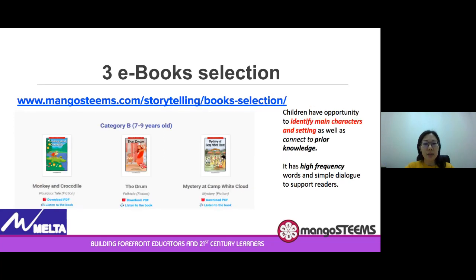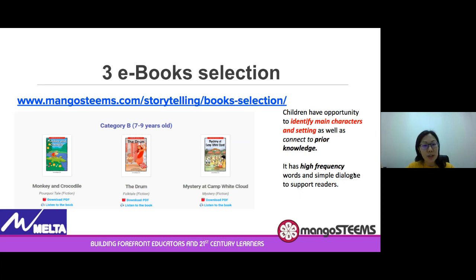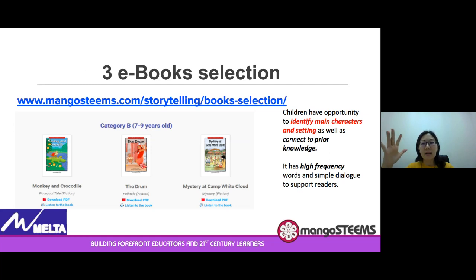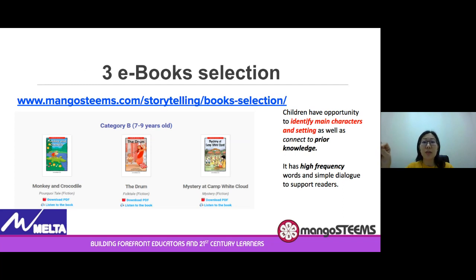For Category B, seven to nine years old, we have three books to choose from as well: Monkey and Crocodile, which is fairly popular with kids and has had a lot of registrations; The Drum, which is also very interesting; and Mystery at Kem White Club. These books give children the opportunity to identify main characters, connect to prior knowledge, and feature high-frequency words and simple dialogues to support early readers.